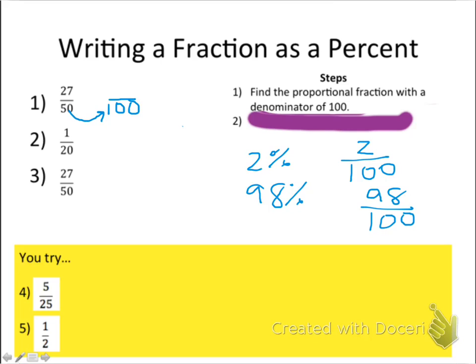How do we get from 50 to 100? You have to think of multiplying or dividing. In this case, we're going to multiply times 2, because 50 times 2 gives 100. Whatever we do to the denominator, we have to do the same thing to the numerator. So we take 27 and multiply it by 2.